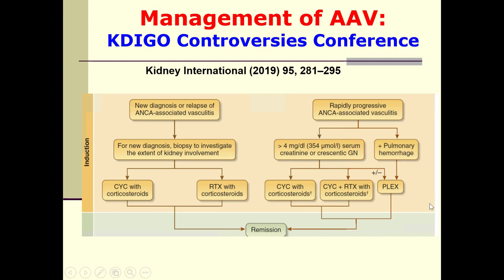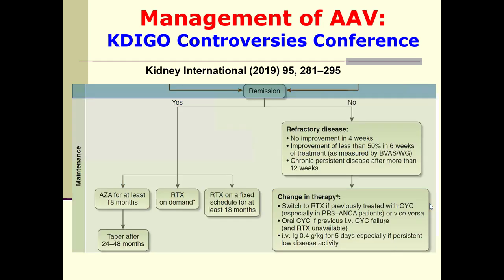After induction treatment, if remission occurs, we move to maintenance immunosuppressive therapy. If there is remission, we continue with azathioprine for at least 18 months, tapering after 24–48 months, or use rituximab on demand, or rituximab on a fixed strategy for at least 18 months. These are the treatment modalities for maintenance therapy.